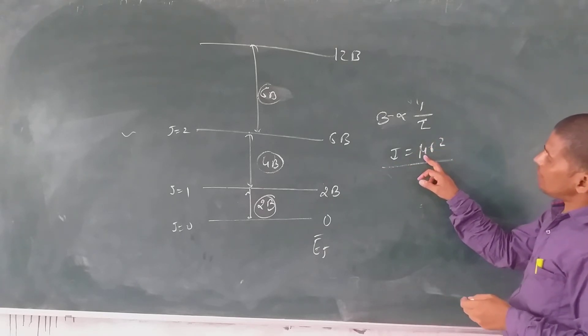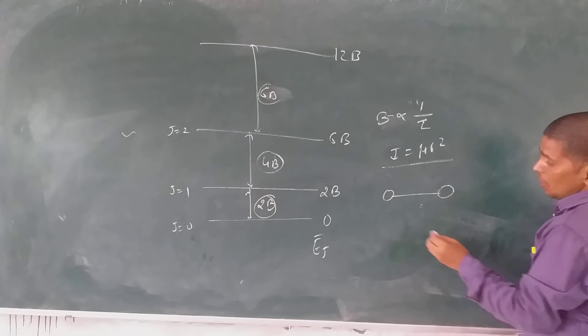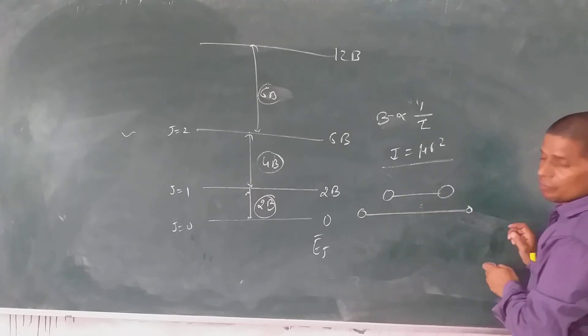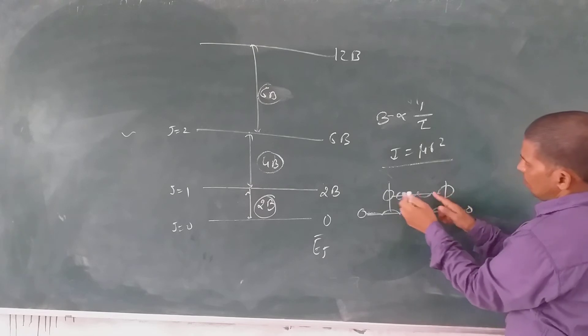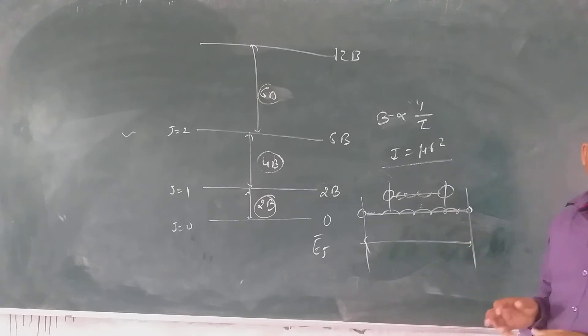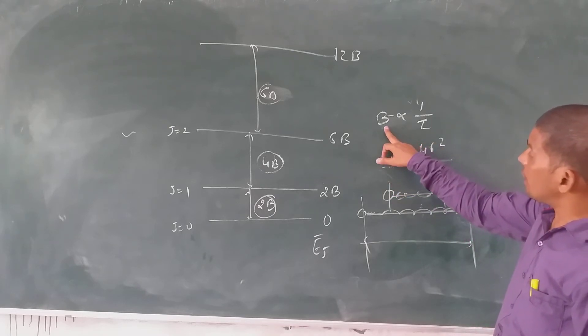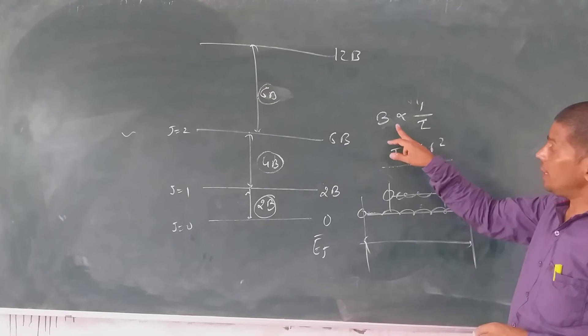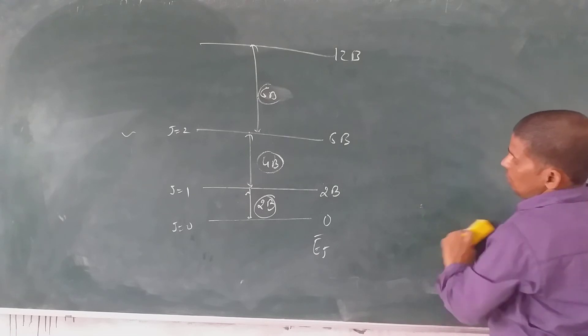In rotational motion, the internuclear distance will increase. So if R increases, I will increase, and there is an inverse relationship with B. So with rotational motion, R increases, I increases, and therefore B will decrease in the non-rigid rotator.